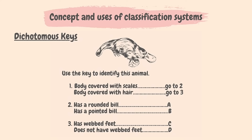There's a picture of an animal given and we first read through the descriptions in step one. The two descriptions are: body covered with scales, and body covered with hair. By looking at the picture, we can see that this organism's body is covered with hair, so we must go to three. The descriptions in number three are: has webbed feet, or does not have webbed feet. The organism has webbed feet, therefore the answer is C.